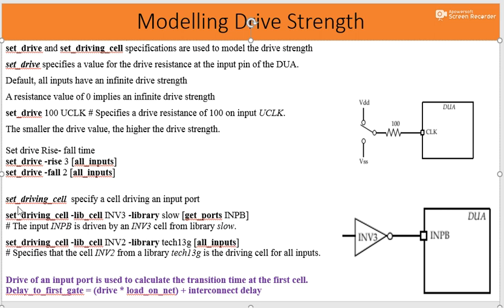Moving to the next command: set_driving_cell. This is taken from the technology library chosen for the design. In the cell library there can be different models — a slow corner model, a fast model, or slow/fast combinations. To specify which cell from the library is used for mapping, we use the command: set_driving_cell -lib_cell INV3 -library slow, where 'slow' represents that input B is connected from the slow library.